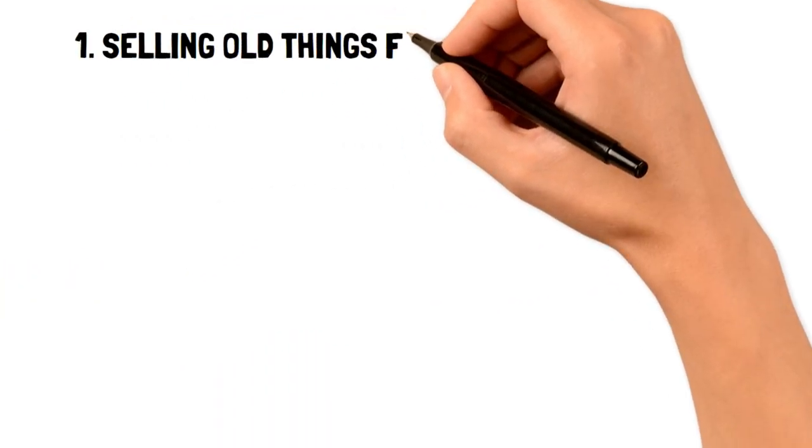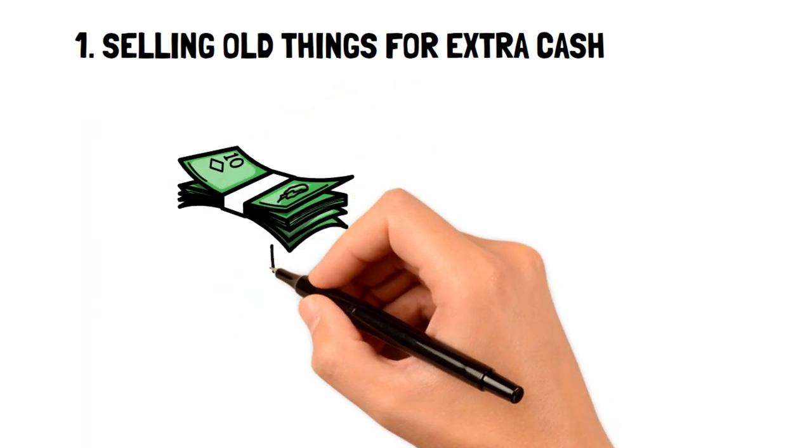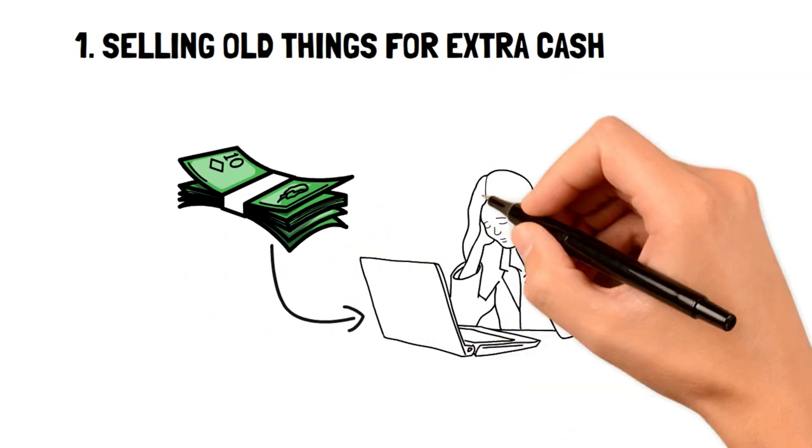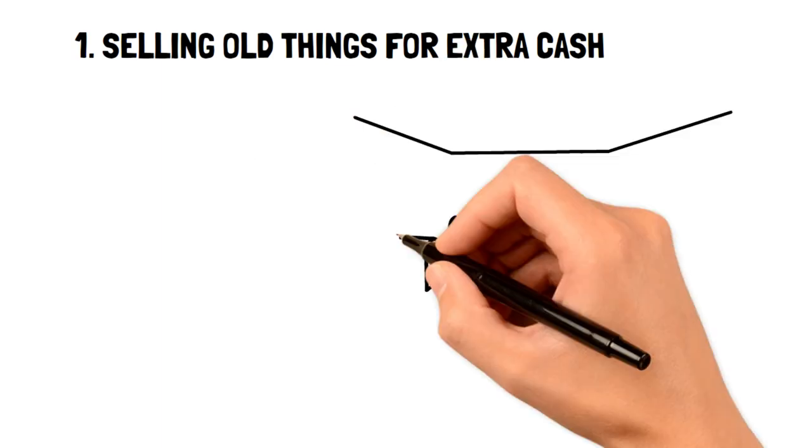1. Selling old things for extra cash. If only you could magically have some extra cash fall into your lap to get rid of debt, especially when you're living on a low income. What if we told you there's a way to get some extra cash pretty quickly?